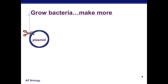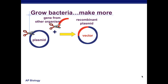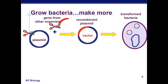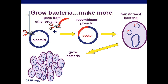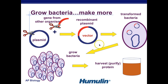Grow bacteria and make more. Just a little review: cut the plasmid, cut the gene from another organism, insert the gene into the plasmid, forming a recombinant plasmid or a vector — you can call it either. A plasmid with another gene, also called a recombinant plasmid, can also be called a vector. Then you have a transformed bacteria. The bacteria will grow, and then you can purify and harvest the humulin, or human insulin.